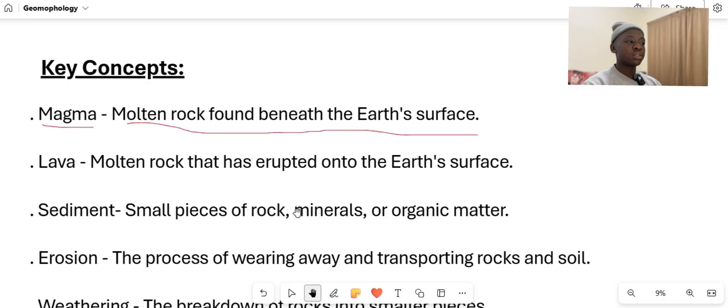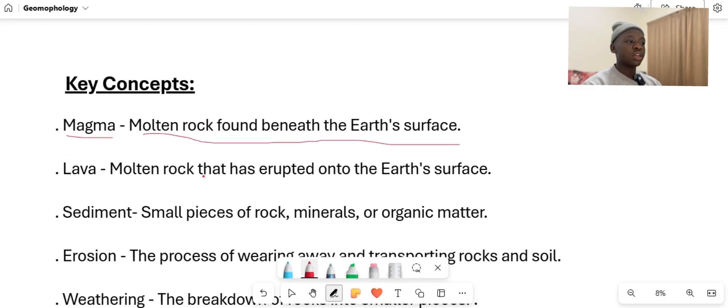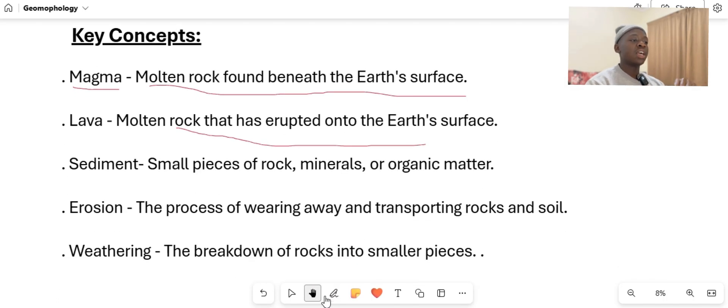As you can see, it is said that lava is molten rock that has erupted onto the surface. So when it's inside, it's called magma, and when it comes outside, it's called lava. And sediment, as well, small pieces of rock or minerals or organic matter.